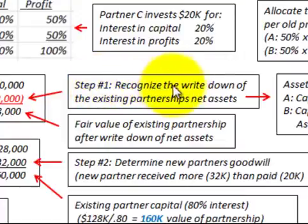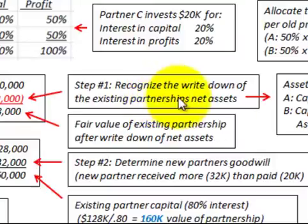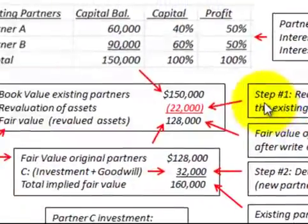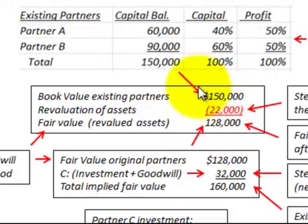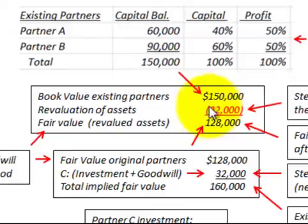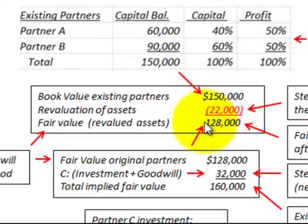Step one is to recognize the write-down of the existing partnership assets. It could be written down or written up, but for our example there's going to be a write-down in our existing net partnership assets. We're going to revalue our assets and reduce them by $22,000. The book value of our existing partners was $150,000, and we had to write down our assets to their fair value by $22,000. So the net amount — $150,000 less $22,000 — gives our fair value of the revalued assets at $128,000.